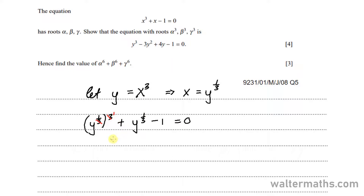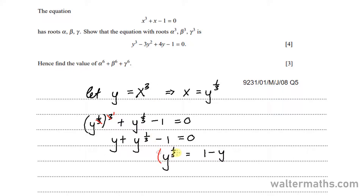We remain with y. So it's y plus y to the power of a third minus 1 equal to 0. Now to do away with the fractional power, we can say y to the power of a third is equal to 1 minus y. And from here I can cube both sides. Doing so means that on the left side we have y, and expanding 1 minus y cubed I get 1 minus 3y plus 3y squared minus y cubed.